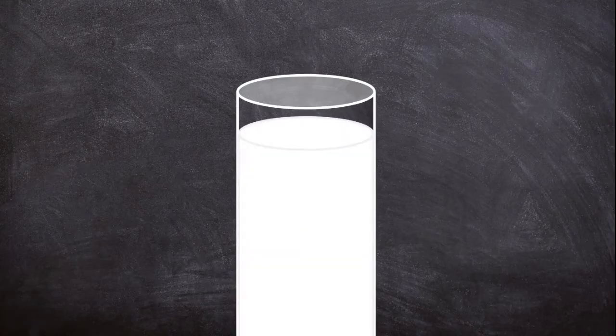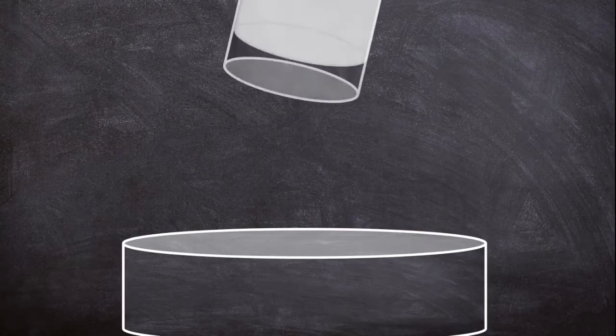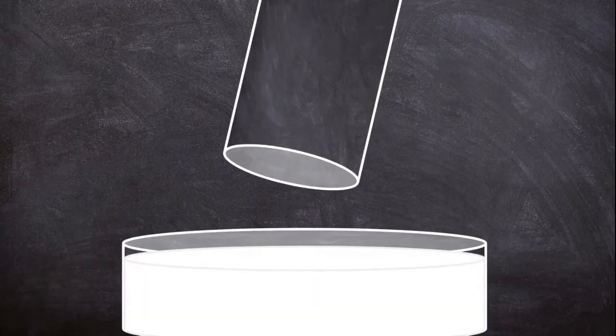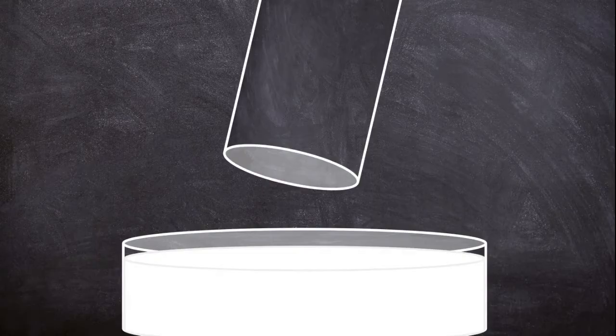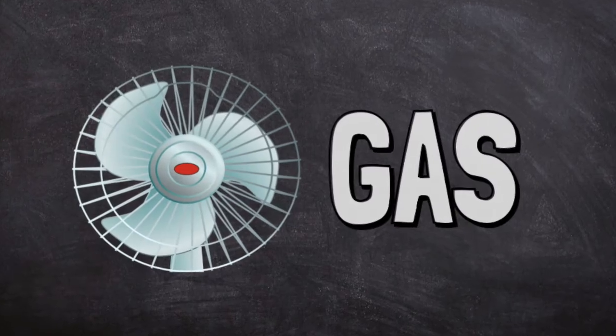If you pour milk into a tall skinny glass, it will be shaped like the glass. If you pour it into a wide flat bowl, it will change shape. Liquid takes the shape of the container it is in. Gas is the third state of matter.